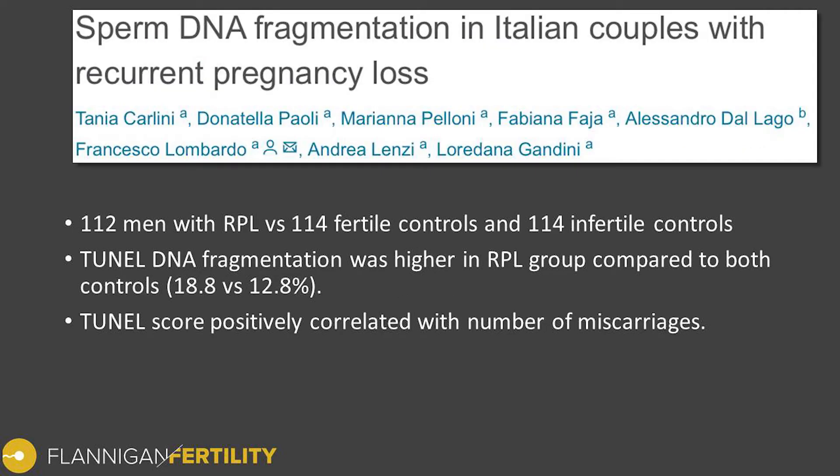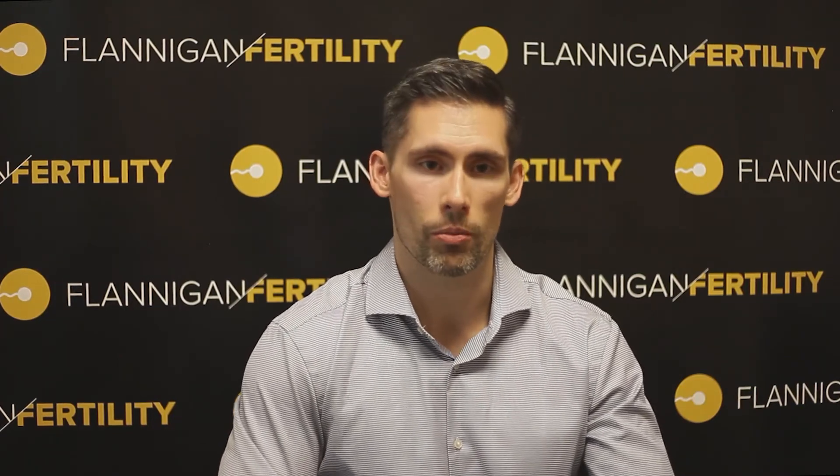In a second study looking at recurrent pregnancy loss and sperm DNA fragmentation, they compared 112 men with recurrent pregnancy loss to two other groups: 114 infertile controls and 114 fertile controls. DNA fragmentation rates were higher in the recurrent pregnancy loss group compared to either of the other groups. The TUNEL score was positively correlated with the number of miscarriages, suggesting that DNA fragmentation within the sperm is contributing to recurrent pregnancy losses.